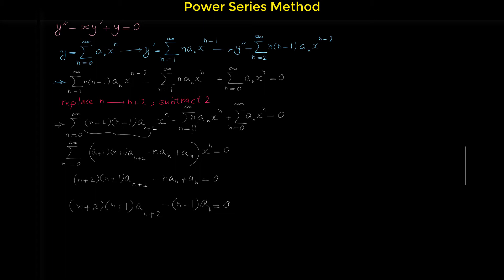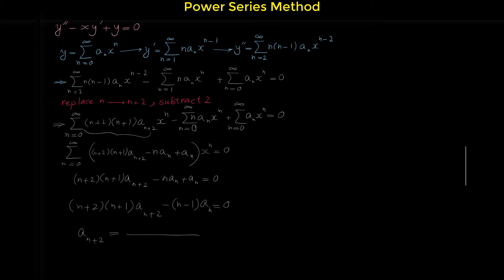From this relation we can find aₙ₊₂. Moving the aₙ term to the right and dividing by the coefficient gives the recurrence relation: aₙ₊₂ equals n minus one over n plus two times n plus one times aₙ. We can use this recurrence relation to find all the coefficients aₙ.